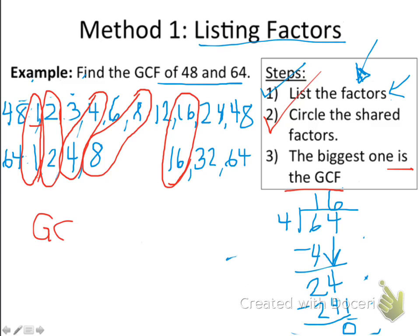And it says the biggest one is the GCF. So whatever our biggest factors that they've circled, that they have in common, is the GCF. In this situation, it is sixteen. And now we are done.